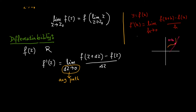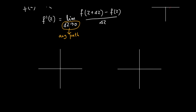Some people write h instead of Δz — you can write anything you wish, either Δz or h. If you observe the definition of derivative for a function of one real variable, they are almost analogous. But the problem is the entire geometry will change here, because in the complex plane we cannot plot the function in the same way. So let us try to find out what this means geometrically.